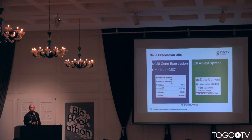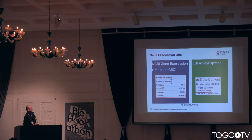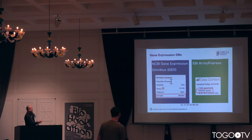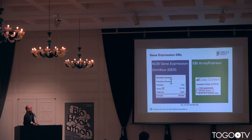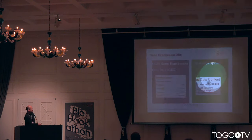Gene expression data is stored in a very complicated situation — there is no central repository for gene expression data. The most famous one is GEO from NCBI, and EBI also makes a database called ArrayExpress. They are not exchanging data now, so if we want to use a public database, we have to search both of them.